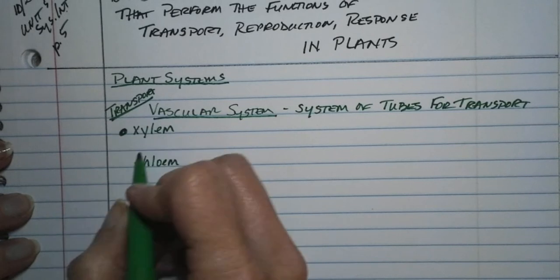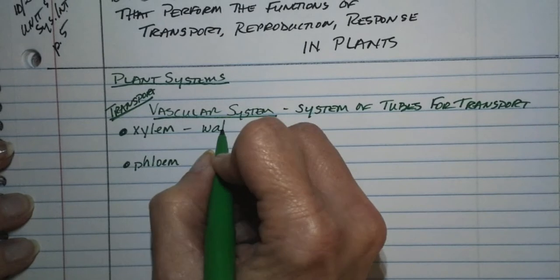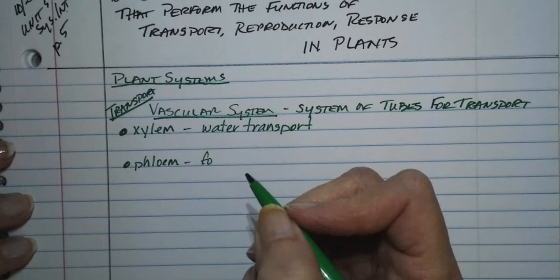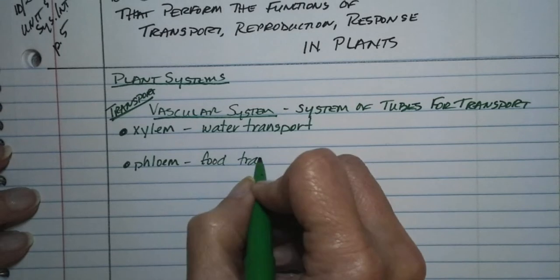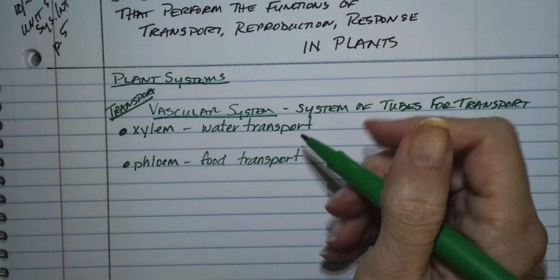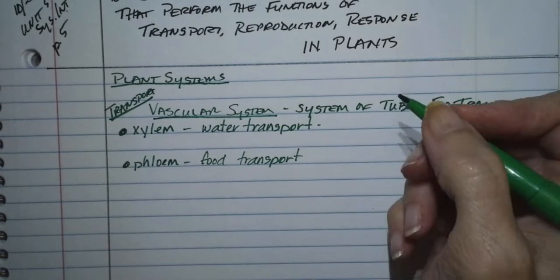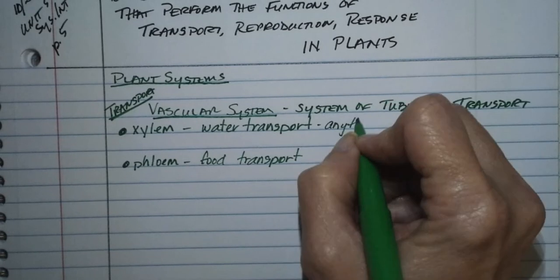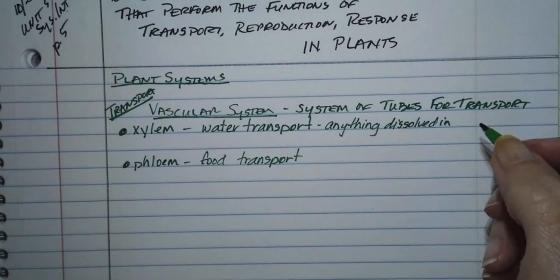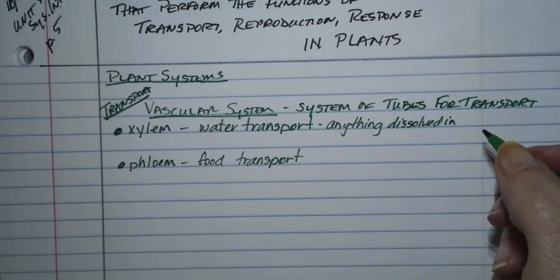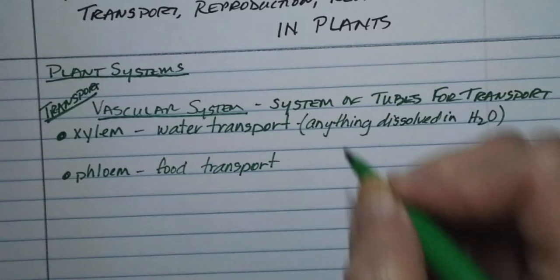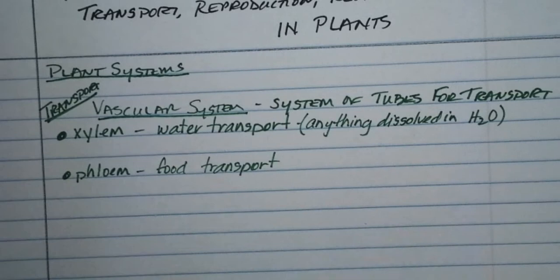Xylem is going to transport water, and phloem is going to transport food. Think phloem-food — both start with that F sound. Within the water, anything that's dissolved in the water is also transported — chemicals they get from the soil, like fertilizer, any minerals in there. Hormones and minerals dissolved in the water are transported with it too. Plants have hormones, which is kind of a weird thing.